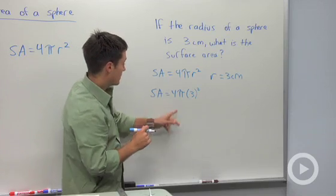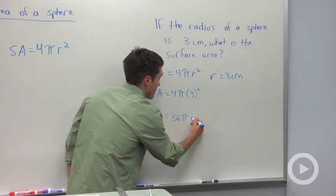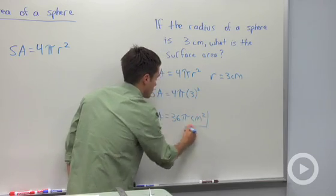Three squared we know is nine. Nine times four is 36. So the surface area of that sphere is going to be 36 pi square centimeters.